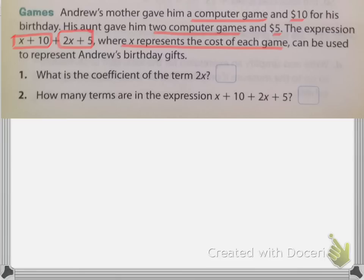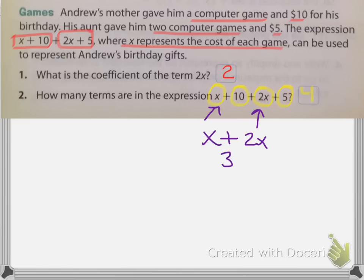It says what is the coefficient of the term 2x? Coefficient means the number that's before the x, so the coefficient would be 2. How many terms are in the expression x plus 10 plus 2x plus 5? Let's circle those so we know which ones they are — we've got 1, 2, 3, 4 different terms. Which terms are going to be like terms? We can see that x and 2x both have an x on them. So x plus 2x will give you 3x — if you have 1x and 2x. We don't ever write it as 1x, we just write it as x.